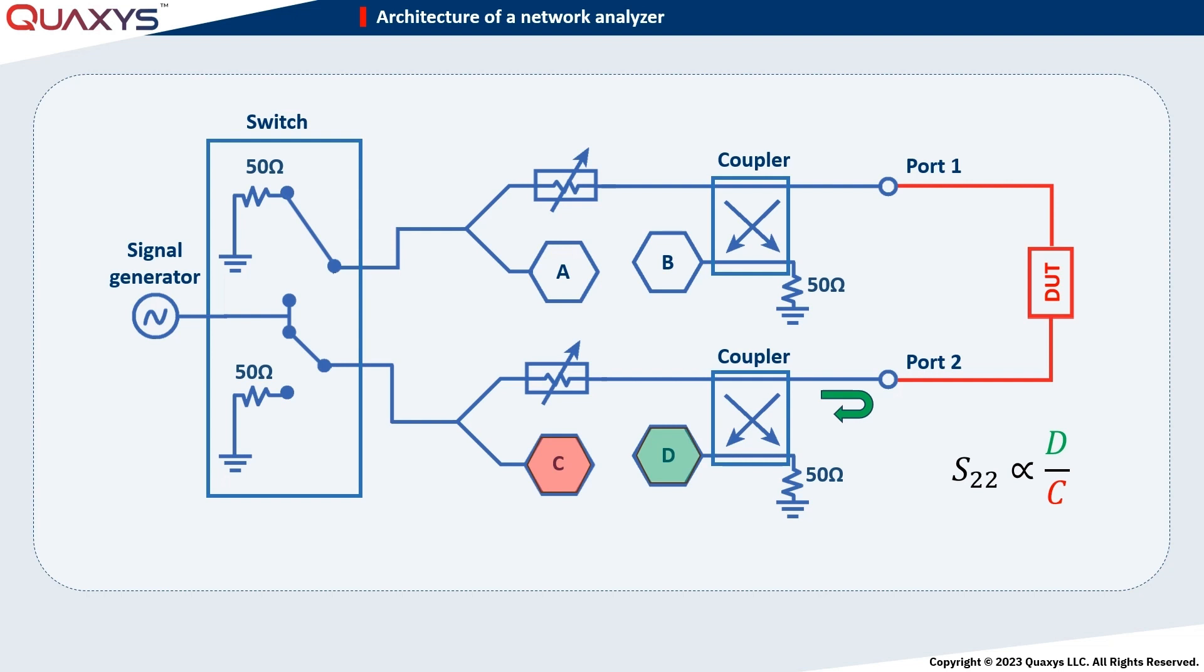The portion of the signal at port 2 continues through the device under test to port 1, where it interfaces with another coupler and couples to detector B. According to the S12 definition, it can be determined as the ratio of transmitted power detected by B and incident power detected by C.